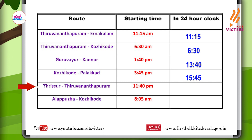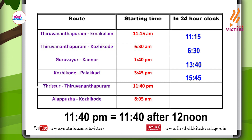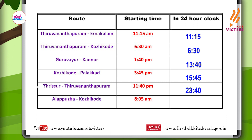The fifth one: Thrissur–Thiruvananthapuram. Starting time is eleven forty PM. That means eleven forty after twelve noon. So in twenty-four hour clock, it is twelve plus eleven forty, that means twenty-three forty.